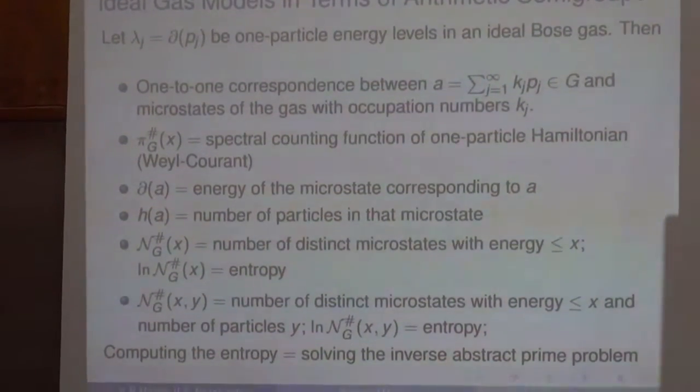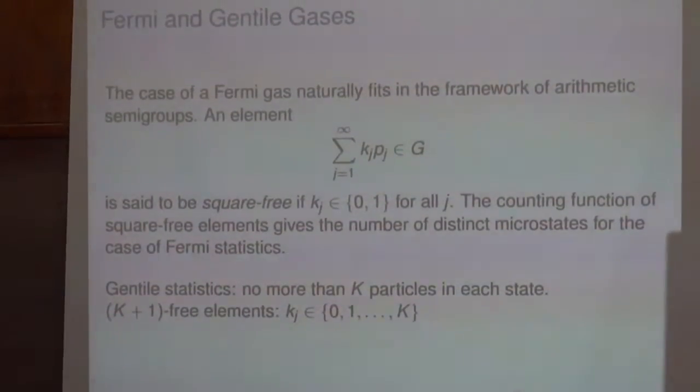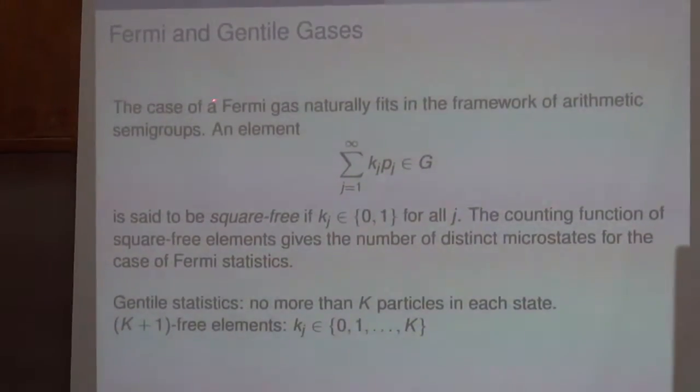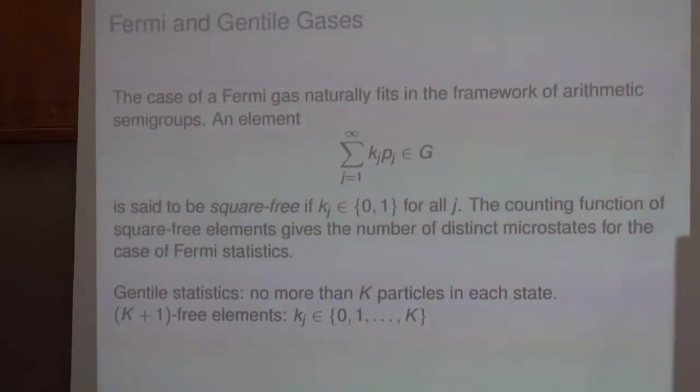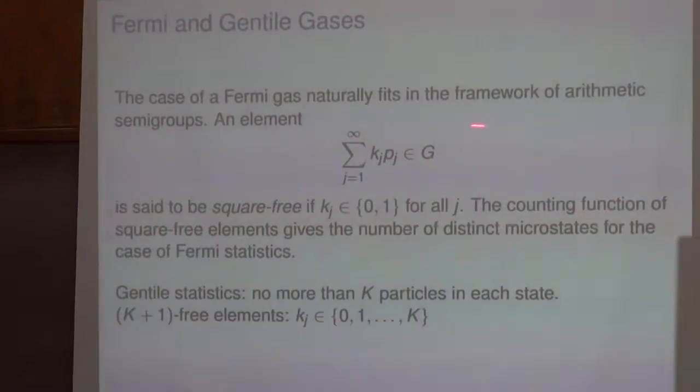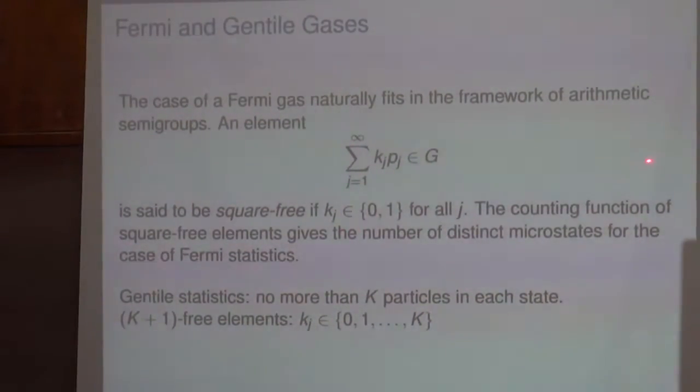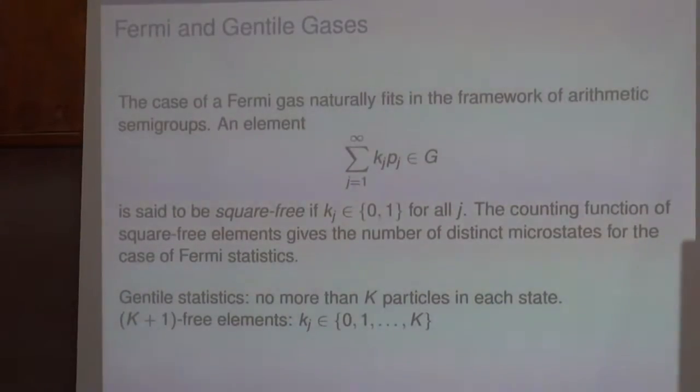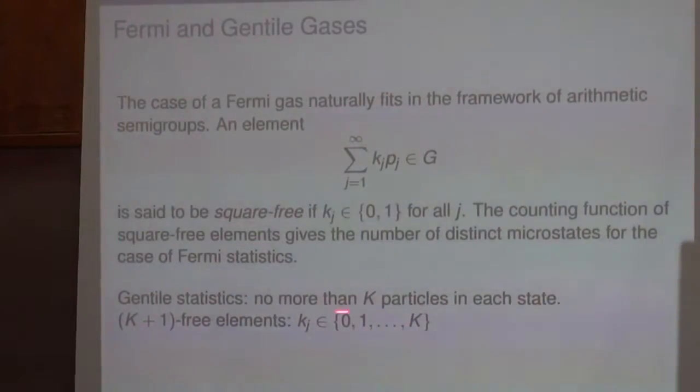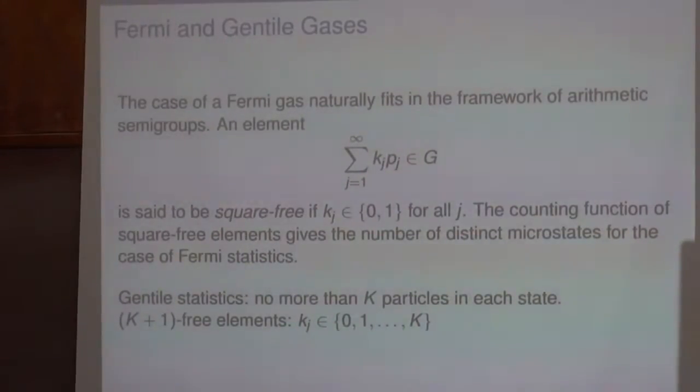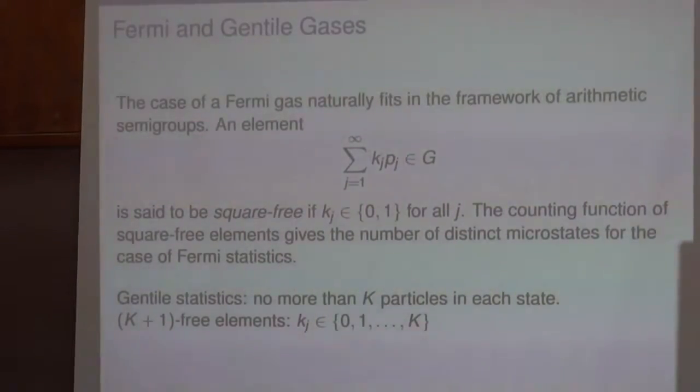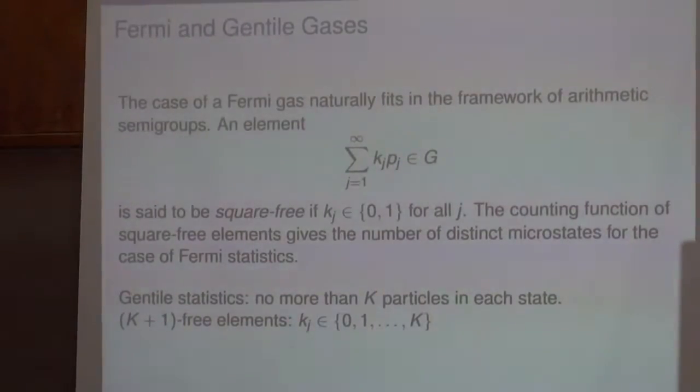We can also consider the case of Fermi gases or Gentile gases. The case of Fermi gas naturally fits in the framework of abstract analytic number theory. An element of G is square-free if k_j are either 0 or 1. Then the counting function of square-free elements gives the number of distinct microstates for the case of Fermi statistics. Similar for Gentile statistics, where there can be no more than K particles in each state, we consider K-plus-first-free elements where k_j are in this set, and the logarithm will give the corresponding entropy.